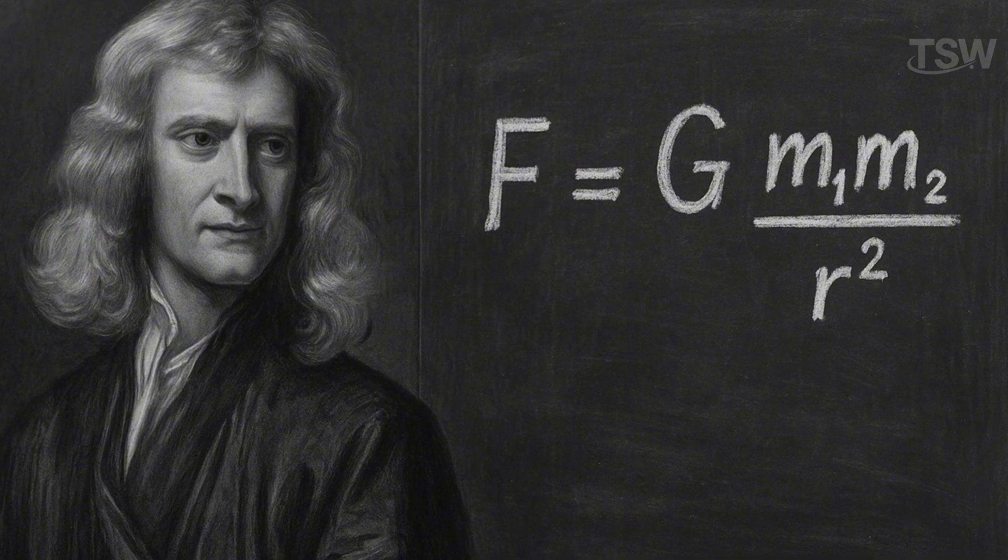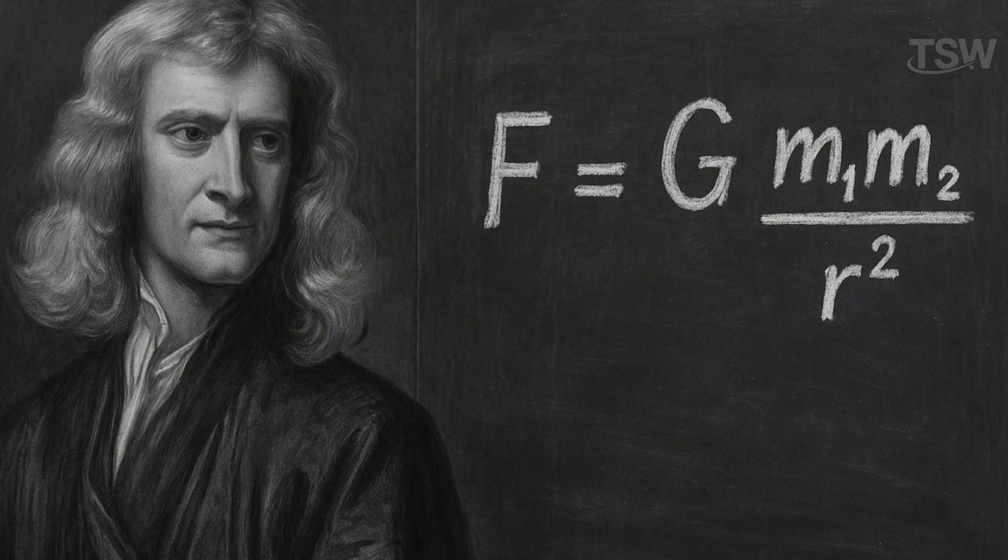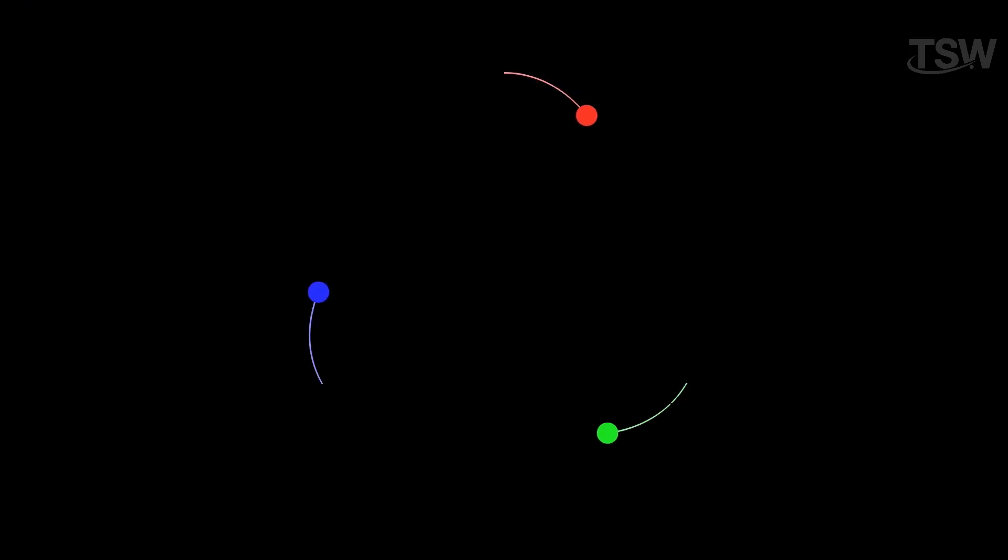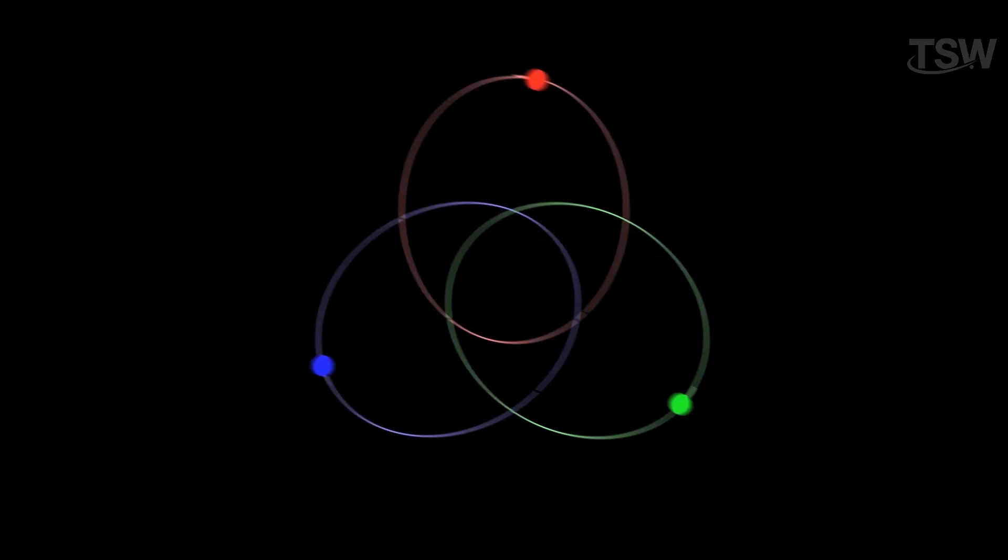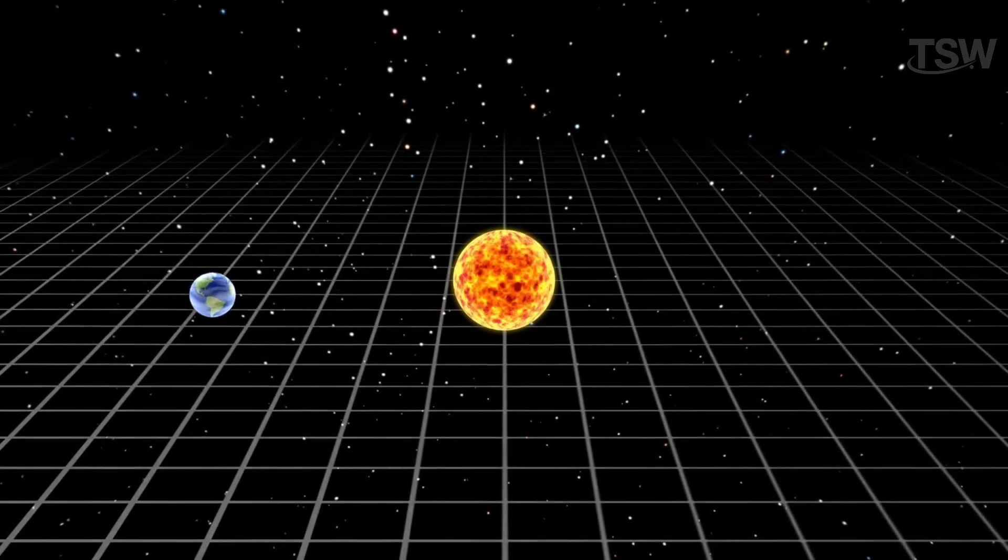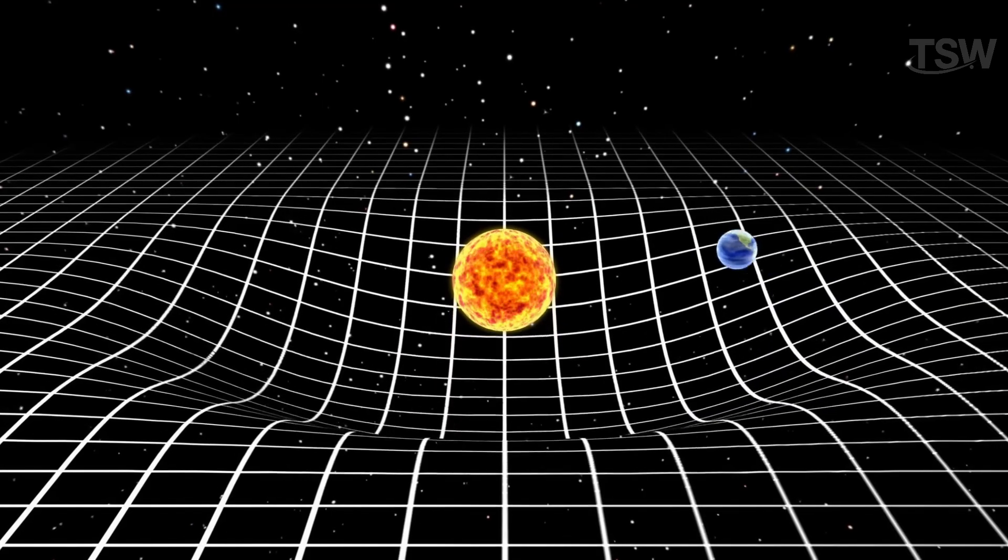which described gravity as an attractive force proportional to the mass of the objects. This approach worked well in most situations, but started to fail under extreme conditions, like near the speed of light or in the presence of incredibly massive bodies.